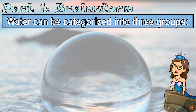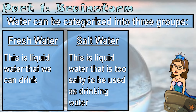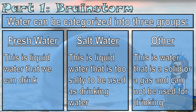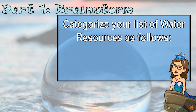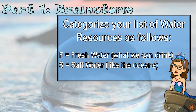Water can be categorized into three groups — it can actually be categorized into a lot more than that, but let's focus on three. We have fresh water: liquid water that we can drink. Salt water is liquid water that is too salty to be used as drinking water. And our final category I'm just calling 'other' — this is water that is a solid or a gas and cannot be used for drinking unless it is melted back into a liquid.